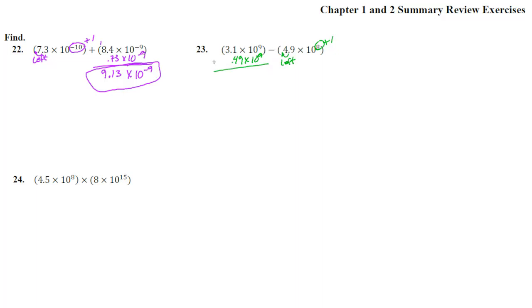Now notice we're subtracting here. We have the stronger one on top, smaller one on the bottom. So let's do this. Cancel from there. 10 minus 9 is 1. 0 minus 4 is too small. 10 minus 4 is 6. Decimal. 2.61 times 10 to the 9th. Good deal.